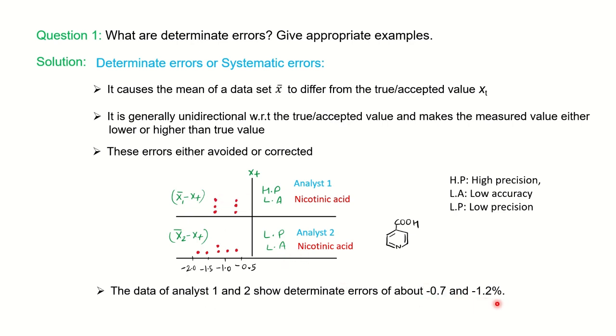Now if you have accurate measurements then the chances of determinate error is low. Low accuracy is giving you determinate error. So if you have more accurate results, means if your results are close to the true value, then the determinate error can be avoided. If this question comes you can describe all these points with taking this example and you can explain it nicely.